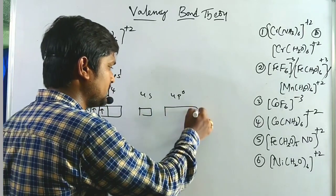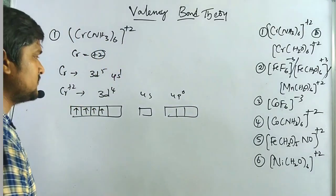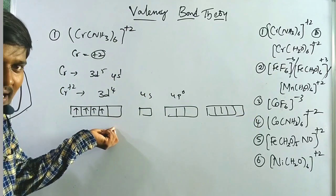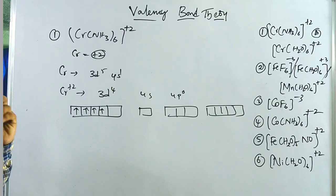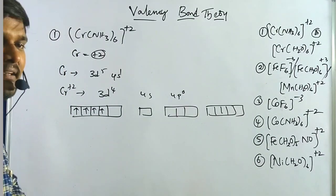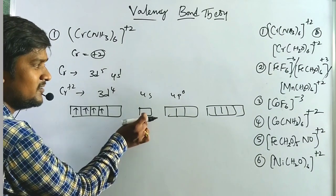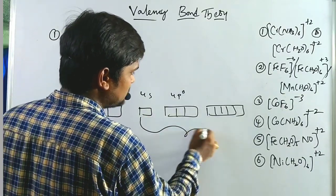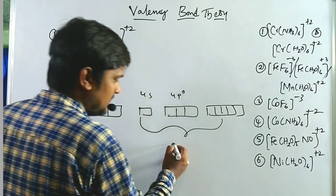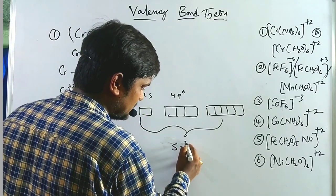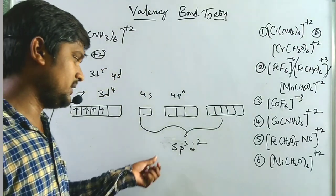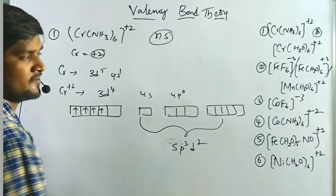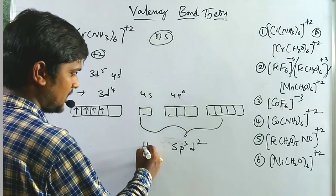The 4s and 4p orbitals are empty. We have 6 ligands, so we require 6 orbitals. Due to the degeneracy of d orbitals (discussed in crystal field theory), the electron enters the s orbital rather than the n-1 d orbital. Therefore, we use d²sp³ — wait, sp³d² hybridization. Since hybridization starts with the ns orbital, these complexes are called outer orbital complexes.